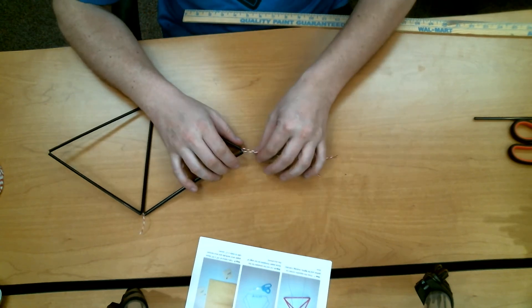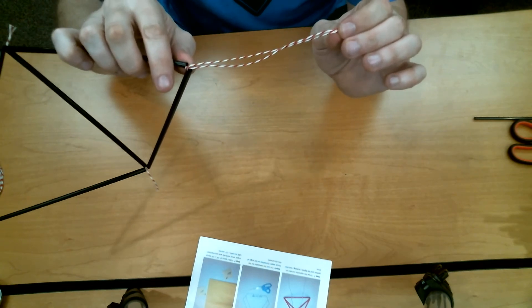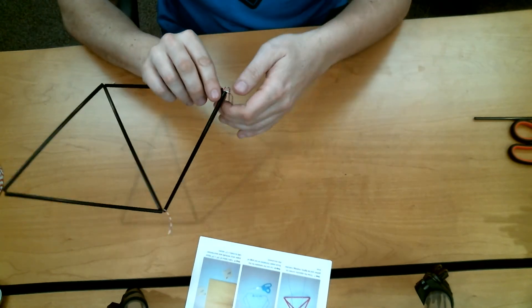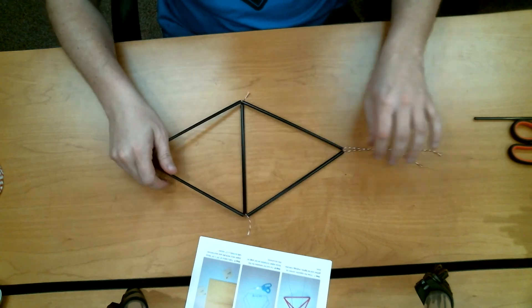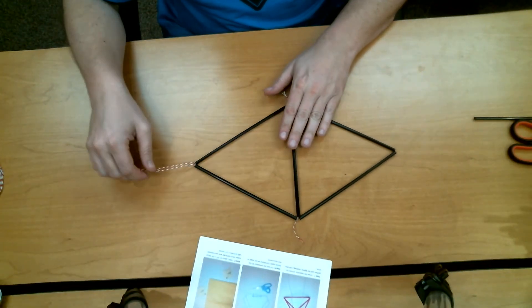We're going to have these two tail ends hanging off the end here. We do not want to cut those yet. Do not cut those until we're done. I'm going to flip it around. Now the tail ends are off to this side.